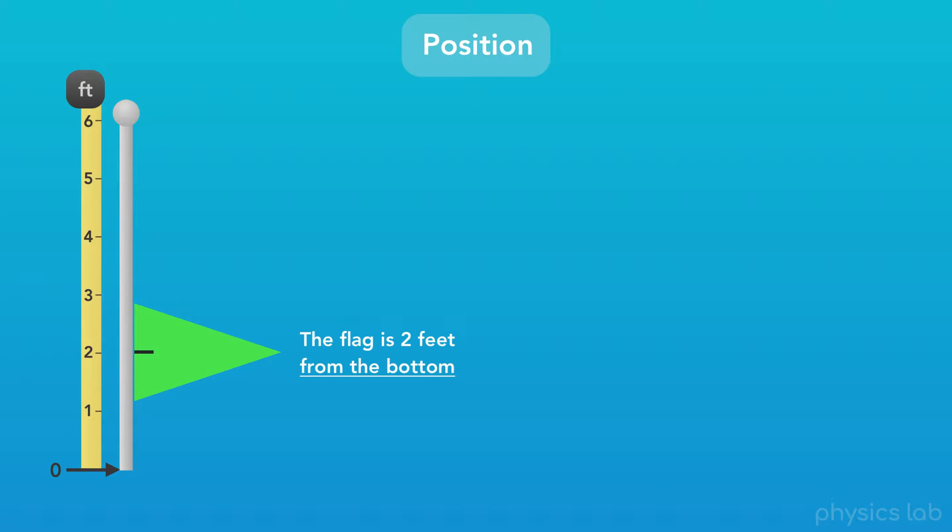What if we measure the position of the flag from the top? Now, the top of the flagpole has a position of zero, and if the flag was in the same position as it is on the left, now we would say the flag is four feet from the top.